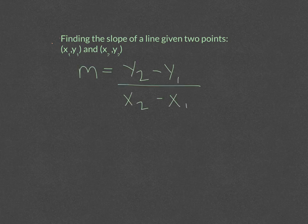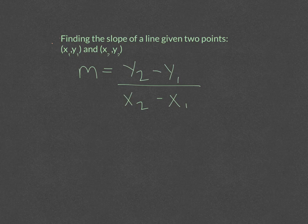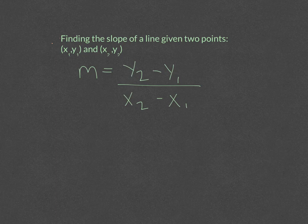m, the slope, is equal to y2 minus y1, so the change in y's, divided by x2 minus x1, the change in x's, or the rise over the run.